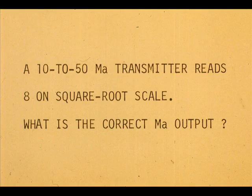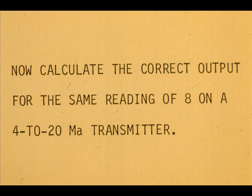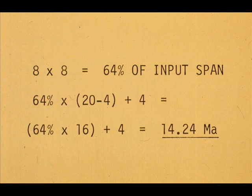A 10 to 50 milliamp transmitter reads 8 on a square root scale. What is the correct milliamp output? The output should be 35.6 milliamps. Now calculate the correct output for the same reading of 8 on a 4 to 20 milliamp transmitter. The answer is 14.24 milliamps.